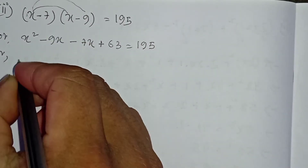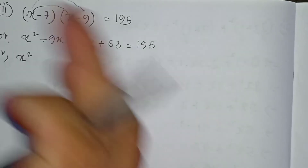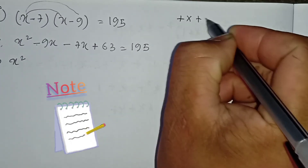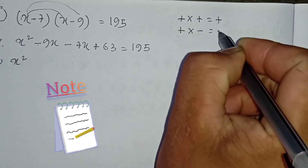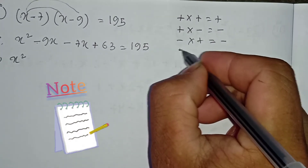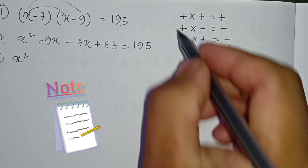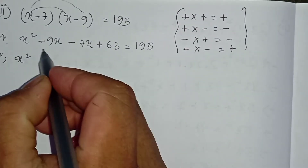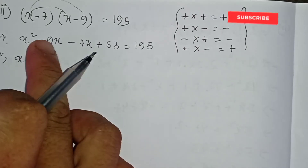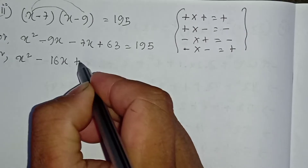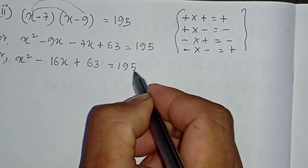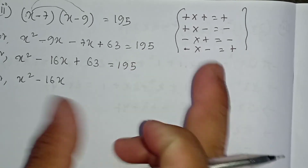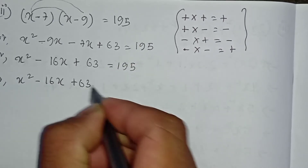For the next step: x squared — minus into minus kills, actually plus — managing the minus. Minus within — I can give you a sign rule table: plus into plus is plus, plus into minus is minus, minus into minus is plus, minus into plus is minus. So managing the minus gives plus. So sign: minus 9x plus 7x gives minus 16x. Plus 63 equals 195. This gives x squared minus 16x plus 63 equals 195. So x squared minus 16x — rail — 195, plus 63 minus equals, cut into plus 63, so x squared minus 16x equals 195 minus 63, which is 132.